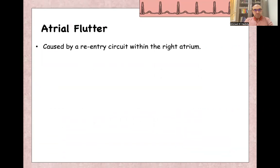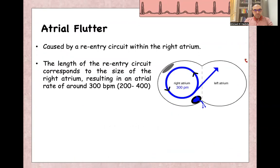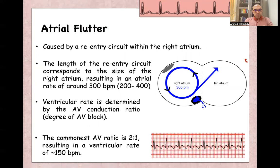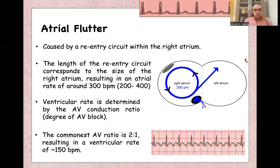Atrial flutter is caused by a re-entry circuit in the right atrium, and the length of the circuit depends on the size of the right atrium, usually resulting in atrial activity around 300 beats per minute. Ventricular rate depends on AV conduction ratio, or AV block, and the most common AV conduction ratio is 2 to 1, resulting in a ventricular rate of around 150 beats per minute.